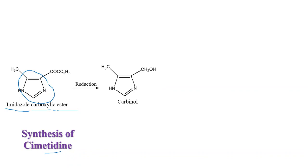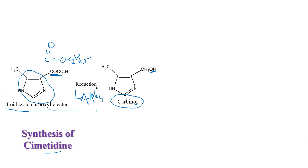This ester undergoes reduction to give the carbinol. The ester group is present — C=O ester — and this ester undergoes reduction to give us alcohol, that's why the name is carbinol, that is alcohol. That reduction is done in the presence of lithium aluminium hydride (LiAlH4). So specifically, the first step is reduction of ester to alcohol by LiAlH4. Once this carbinol has been synthesized, it reacts with the next moiety.